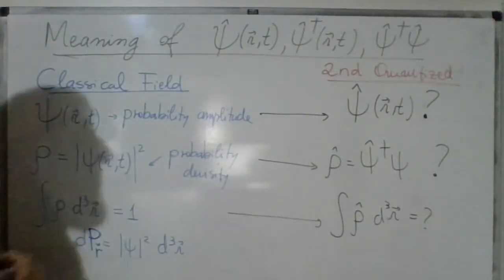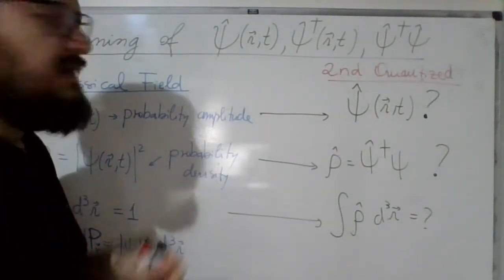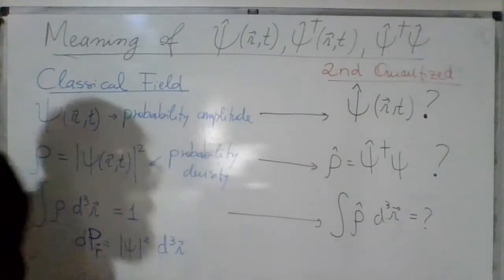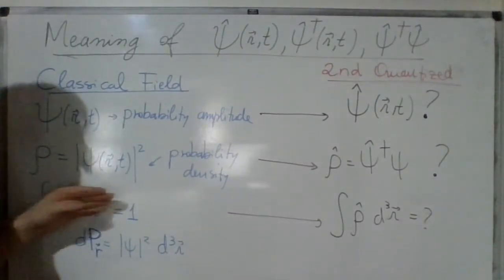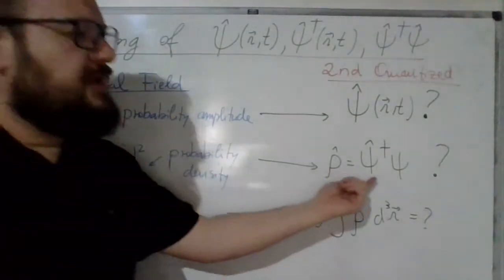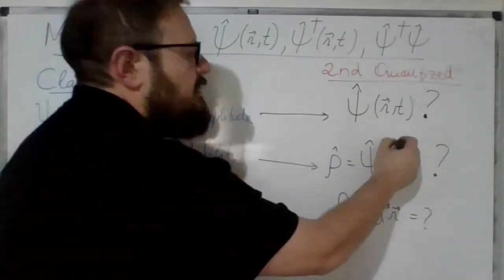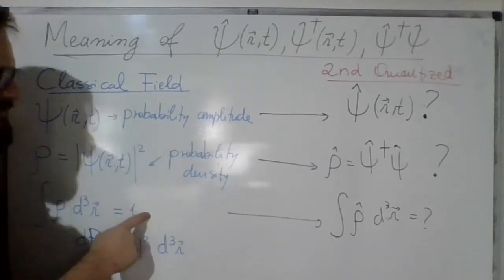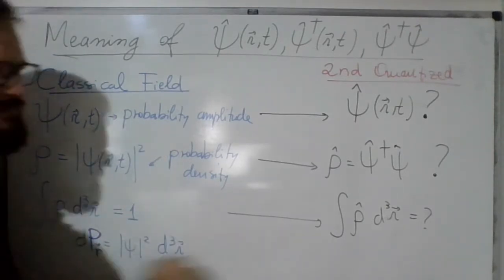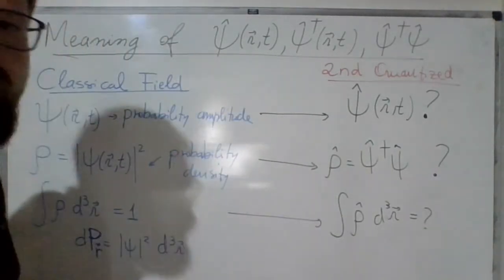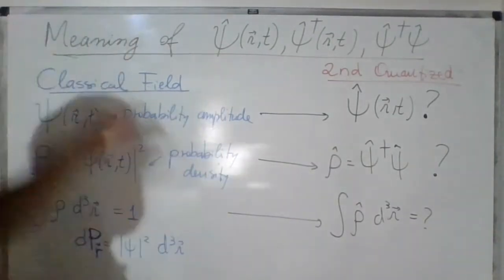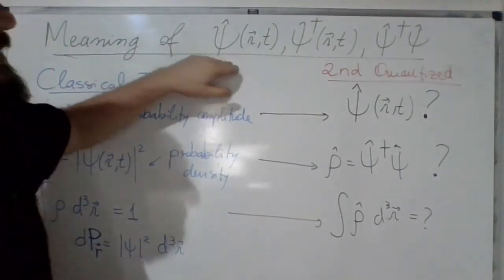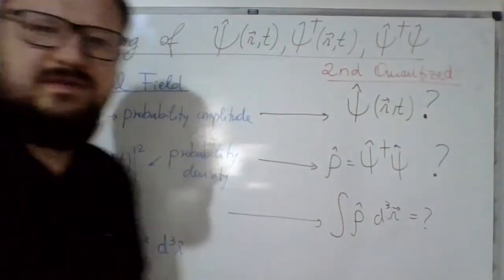When we second quantize the field, in place of psi we have a field psi as an operator, because both psi and psi dagger are operators. This integral, which for a classical field is normalized to unity due to the probabilistic interpretation, becomes an operator expression. The present lecture will be focused on interpreting psi, psi dagger, and the product of these two operators.